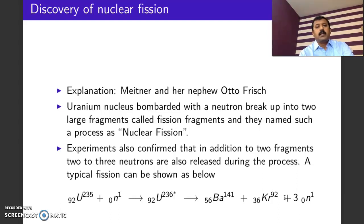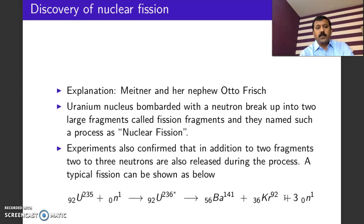This process was later named fission. Meitner and Otto Frisch gave the correct explanation: when uranium is bombarded with a neutron, the heavy element uranium breaks up into two or more lighter fragments, and this process is named the nuclear fission process.